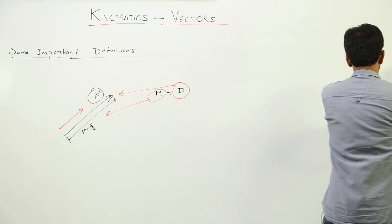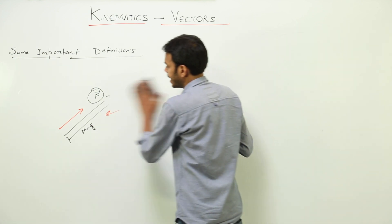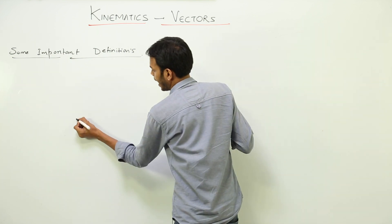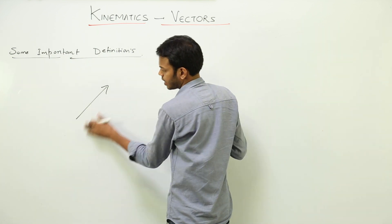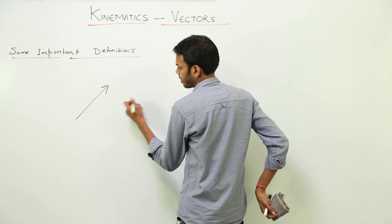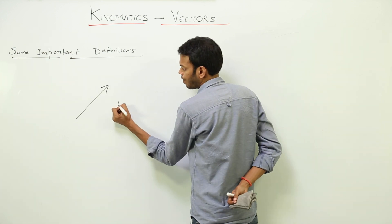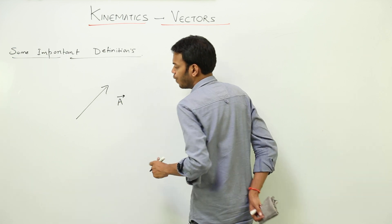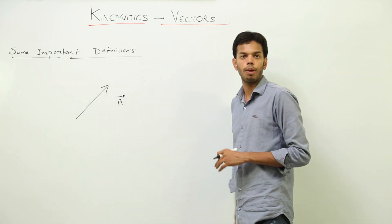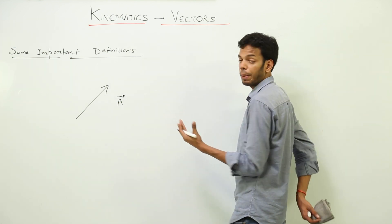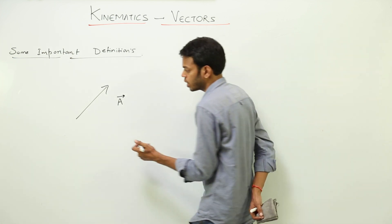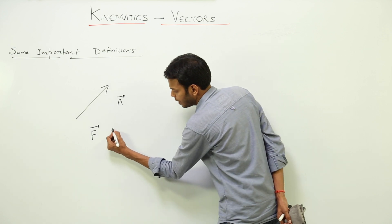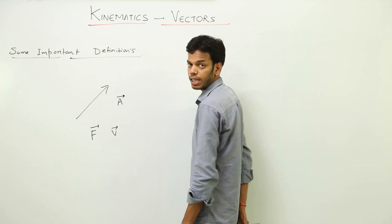This is the geometrical representation — an arrow is the vector representation. Alphabetically, a vector is represented by a capital letter with an arrow above it. This is the vector representation. For example, force in vector form would be F with an arrow, and velocity in vector form would be V with an arrow.